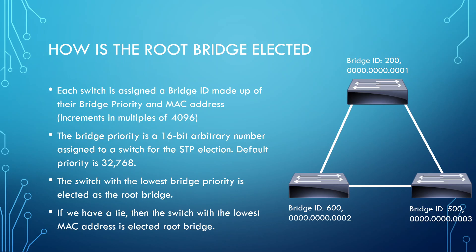How is the root bridge elected? Each switch with STP is assigned a bridge ID made up of a 16-bit bridge priority and a 48-bit MAC address. The bridge priority is an arbitrary number assigned for the STP election process; it's a multiple of 4096, and the default priority for every Cisco switch out of the box is 32,768. The switch with the lowest bridge priority will be elected as the root bridge. If two switches have the same bridge priority, the switch with the lowest MAC address will be elected as the root bridge.